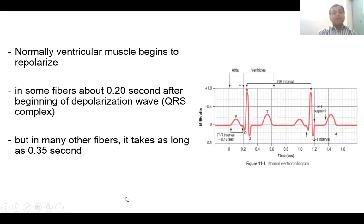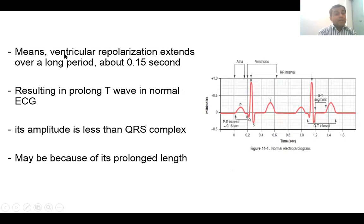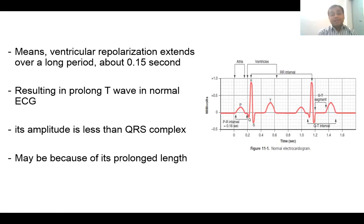Normally, ventricular muscle begins to repolarize in some fibers about 0.20 seconds after the beginning of the depolarization wave when the Q wave starts, but in many other fibers it takes as long as 0.35 seconds. All ventricular muscle fibers do not get repolarized at the same time — there is a large time lag between sets of fibers. Ventricular repolarization therefore extends over a long period of about 0.15 seconds, resulting in a prolonged T wave in the normal ECG with lower amplitude than the QRS complex.